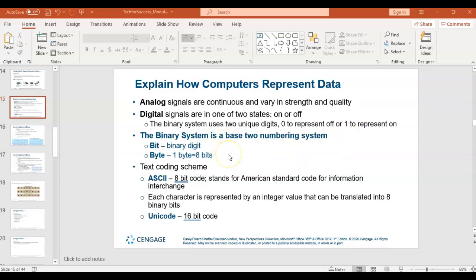Some key terms: a single digit, a single zero, a single one is referred to as a binary digit or a bit. Eight of those is considered one byte, and so one character takes up eight bits or one byte.